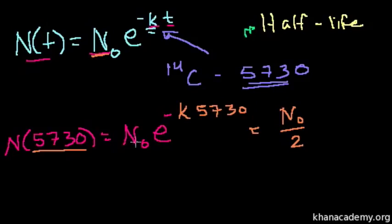So if we try to solve this equation for k, what do we get? Divide both sides by N0. Get rid of that variable. And then we're left with e to the minus 5,730k. I'm just switching these two around. Is equal to 1 half.